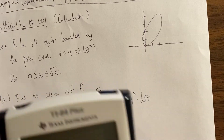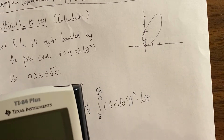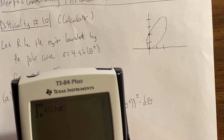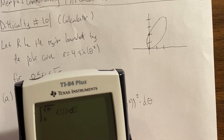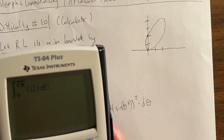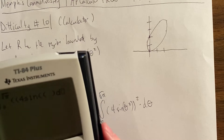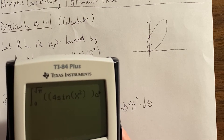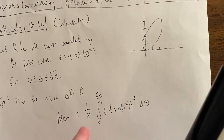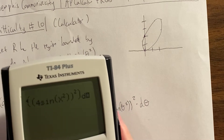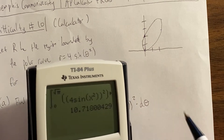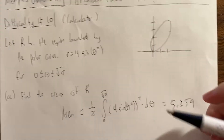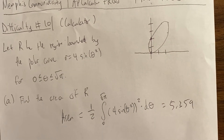Now we type this in a calculator. Just keep in mind that you should be in radians. It's going to be the math integral from zero to square root of pi. When you're typing in this function, remember to square the r — so it's going to be one half times (four sine of x squared), squared. Then we divide by two. The final answer is 5.359. Not too bad of an area question — the key is recognizing that the trouble angles on any polar curve are when the polar curve is at the origin.